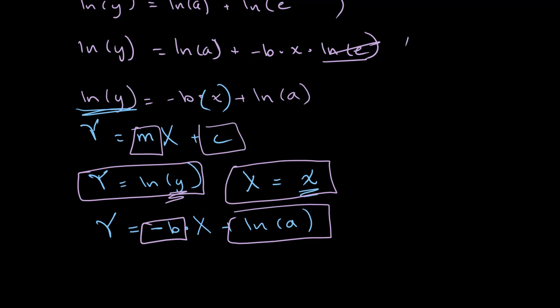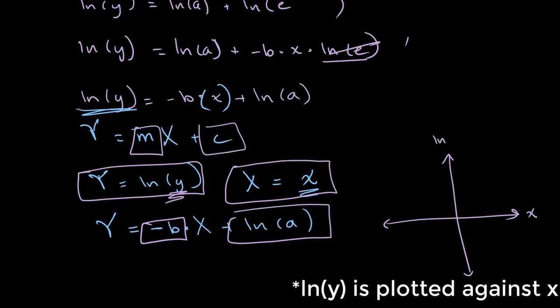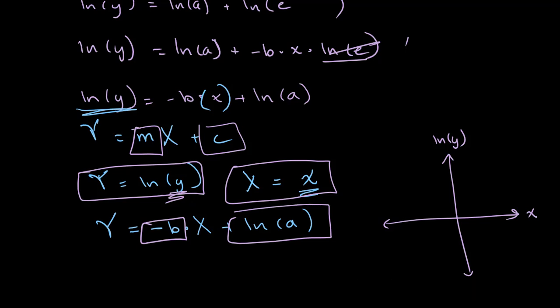If we were to draw this on a graph, we would plot x against ln of y. Depending on the values of a and b, we would get a straight line graph that might slope upward or downward.